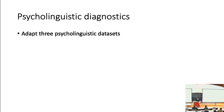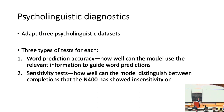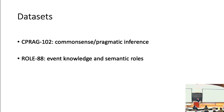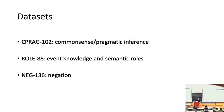Our three datasets: the CPRAG dataset targeting common sense and pragmatic inference; the Role dataset targeting event knowledge and semantic roles; and the NEG-136 dataset targeting negation. The CPRAG dataset comes from the Federmeyer and Kutus football-baseball study. Sentences like 'He caught the pass and scored a touchdown, there was nothing he enjoyed more than a good game of' and 'He complained that after she kissed him he couldn't get the red color off his face, he finally just asked her to stop wearing that.' To make accurate predictions, you need common sense inference to discern what's being described — the referent is never mentioned directly — and then pragmatic inference to determine how the second sentence relates to the first.